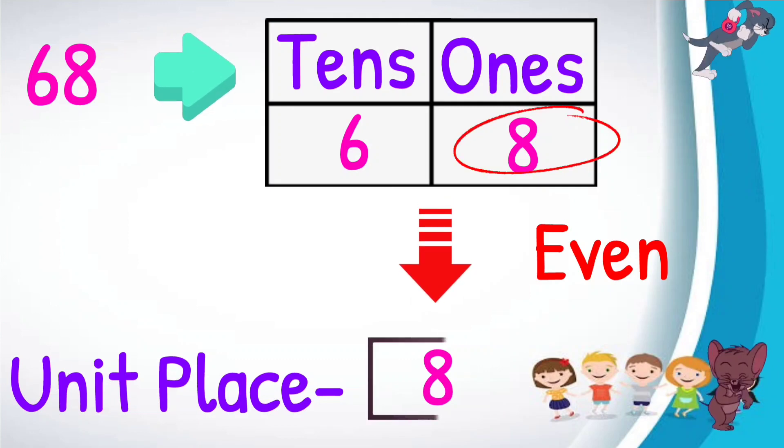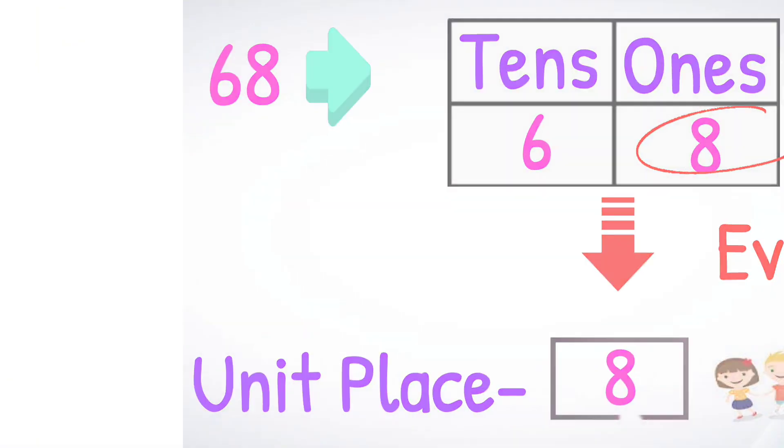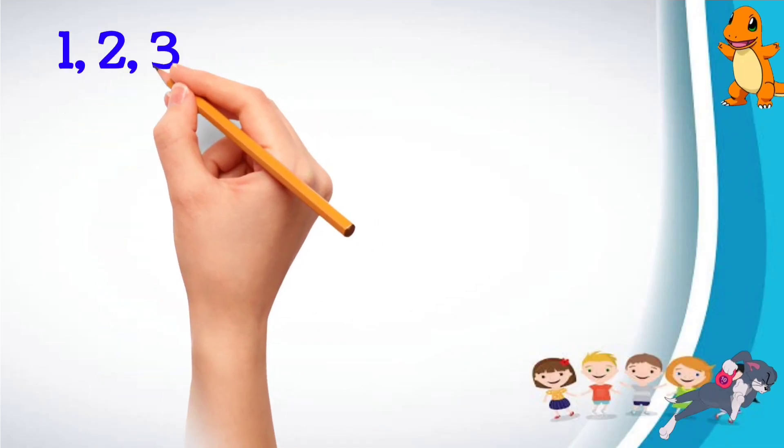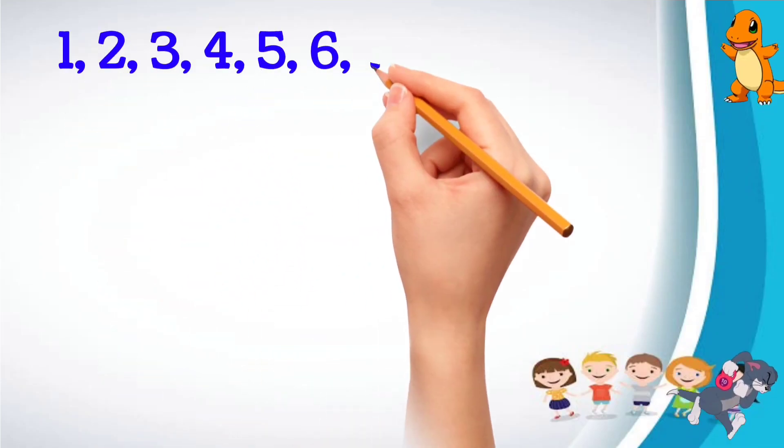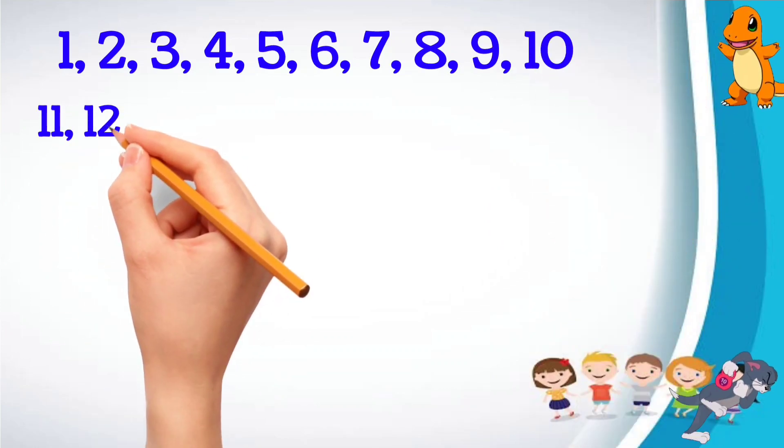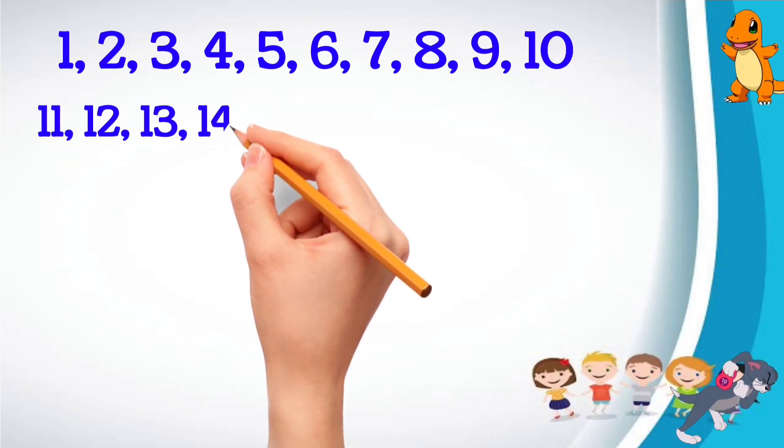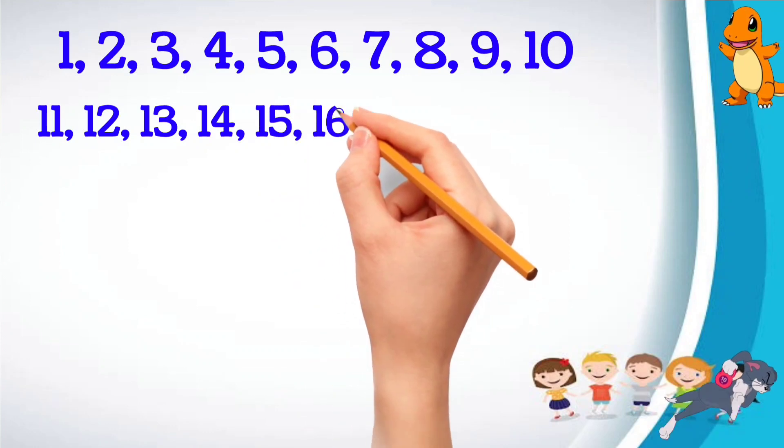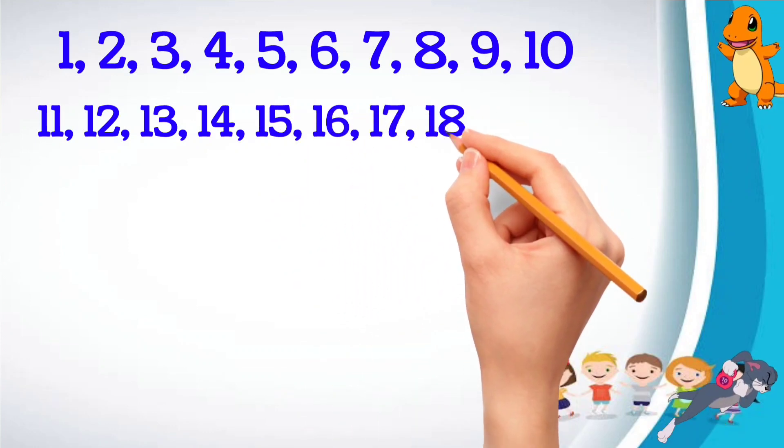Now let us recap and divide the numbers into even or odd numbers. For example, we can take numbers 1 to 20. Let us divide these numbers into even or odd numbers.